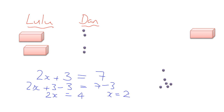As an equation, we started with 2x plus 3 equals 7. We took away three sweets from Lulu so we could just be left with boxes, and to be fair we took away three from Dan, leaving two boxes equals four sweets, so each box must have two sweets. This gives us the first big principle of equations: you always have to be fair. Whatever's on the left-hand side must be absolutely equal to what's on the right-hand side. If you take something from the left, you must take exactly the same from the right. If you give Lulu something extra, you'd have to give Dan something extra.